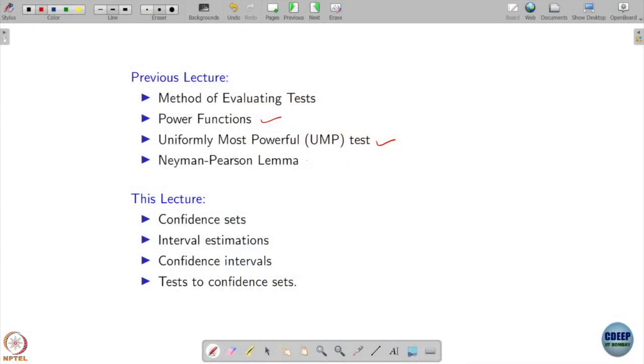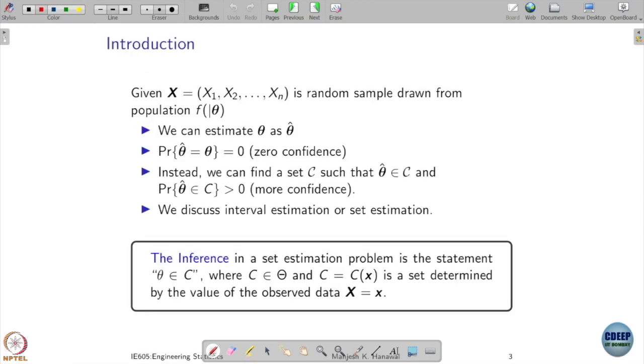In the last lecture, we started discussing about confidence sets. We will continue that today, but before that we mostly talked about hypothesis testing and there we covered all these aspects of power functions, uniformly most powerful tests, and then we talked about Neyman Pearson Lemma.